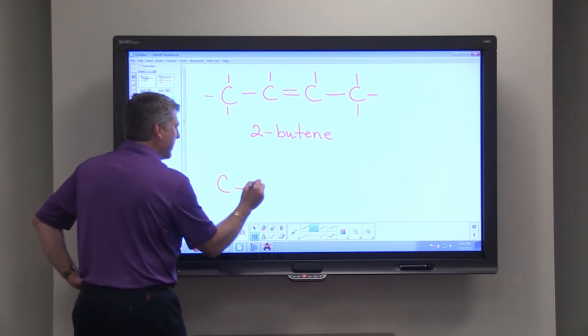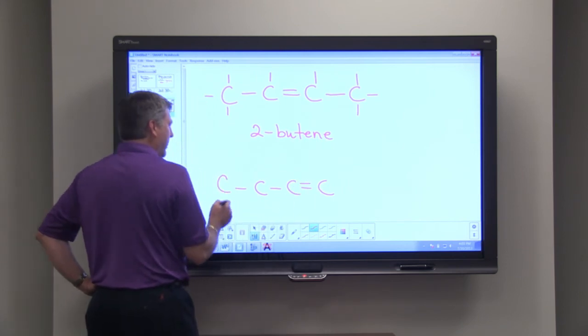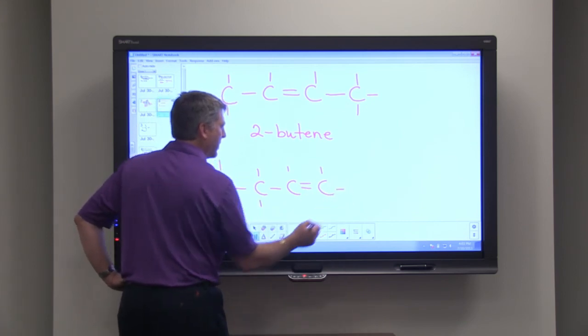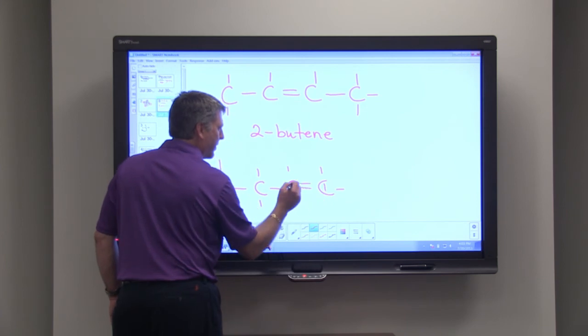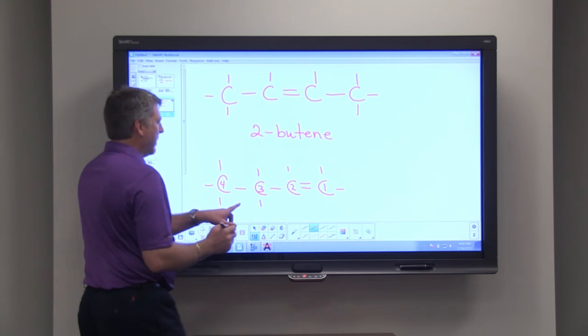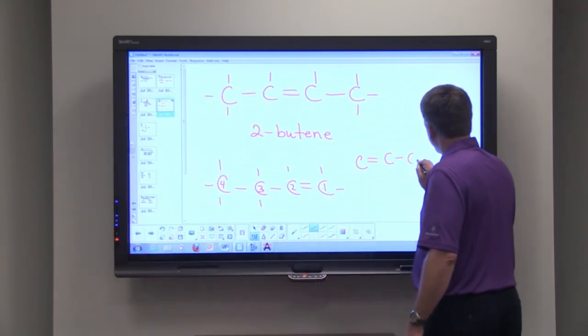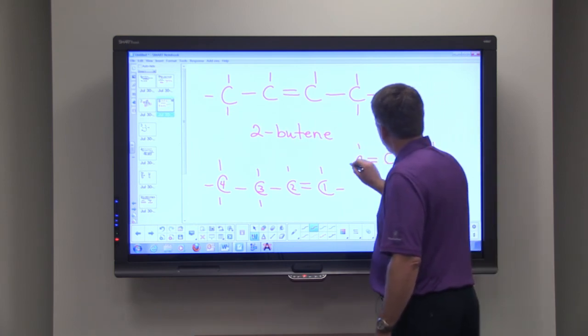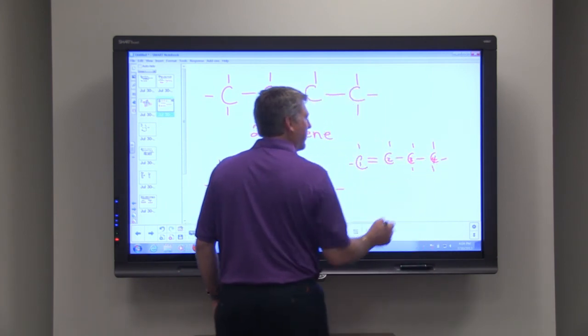We have to be careful not to get carried away. Sometimes people will say, well this must be 3-butene. But the problem is, this is 1-butene. Here's our first carbon, here's our second, here's our third, and here's our fourth. So this substance is the same as this one. It's just been flipped. So here's one, two, three, four.